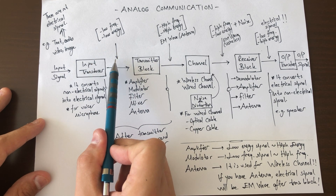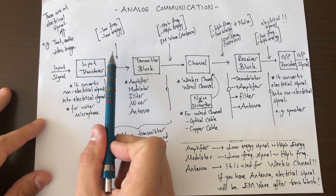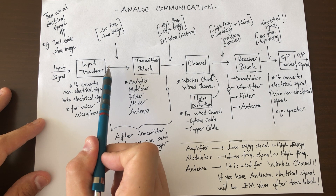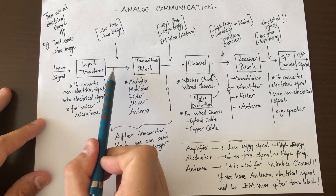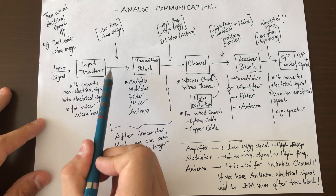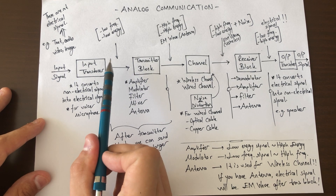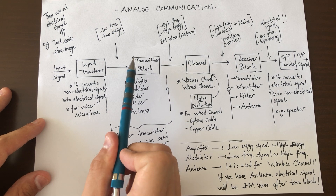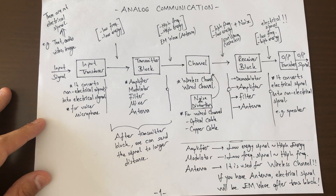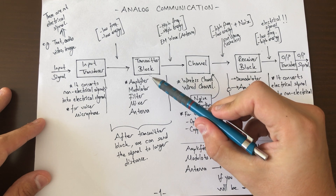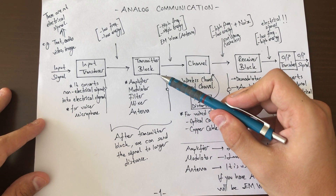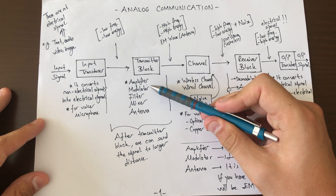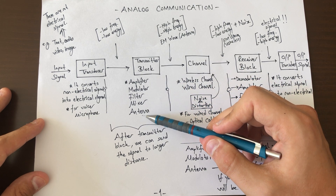After the input transducer, our input signal has low frequency and low energy. To make the input signal strong, we use the transmitter block. The transmitter block includes an amplifier, modulator, filter, mixer, and antenna.